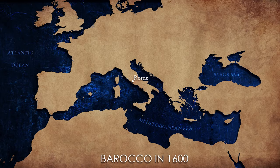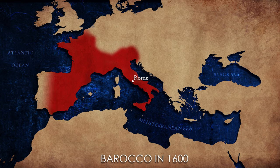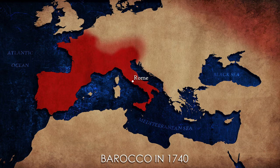What we are really sure about is that the style started in 1600 in Rome — reason why you'll often hear me using the word Barocco in Italian and not Baroque in English. From there it rapidly spread to France, Spain, Portugal, and then also to Austria, Southern Germany, and Russia until the 1740s.